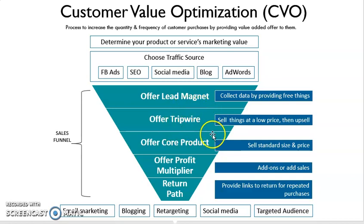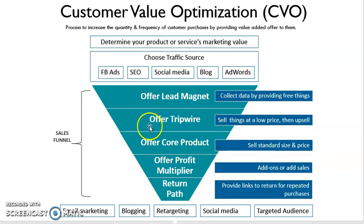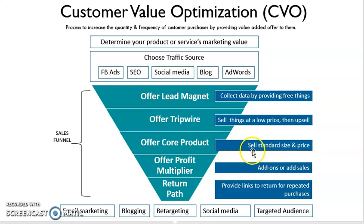After they like our product, then we try to offer them the core product. After people try our product, this group of people might be more interested, so we start to offer them the core product. With the core product, it means we sell them at the standard price — the standard product that we are selling, which is the normal package.